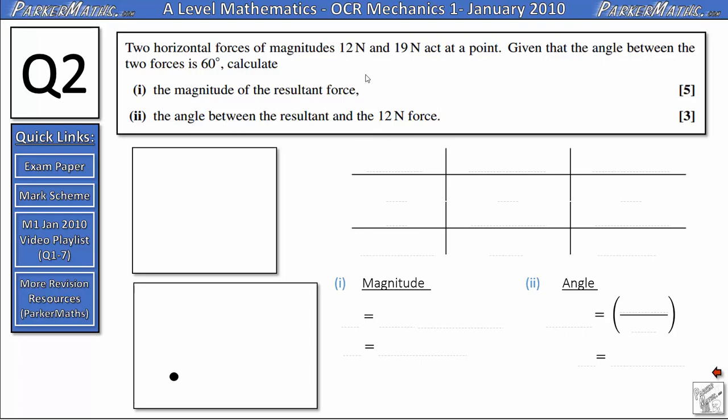In order to answer this question I'm going to draw a diagram of these two forces. All we know from the question is that one of them is 12 Newtons, one of them is 19 Newtons and the angle between them is 60 degrees. But the way I draw it can help me a lot when I'm solving this problem.